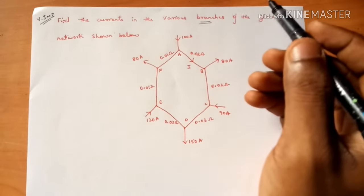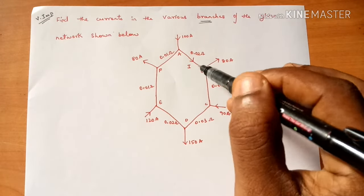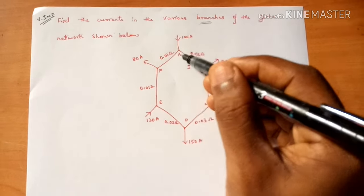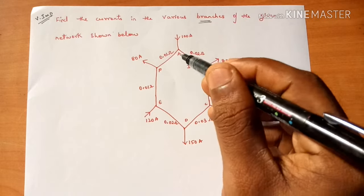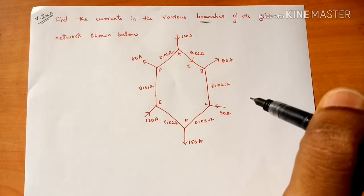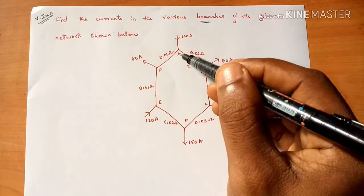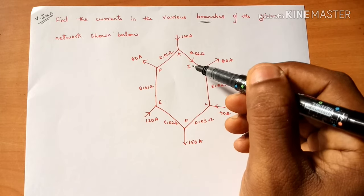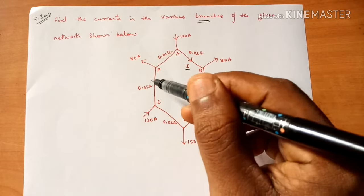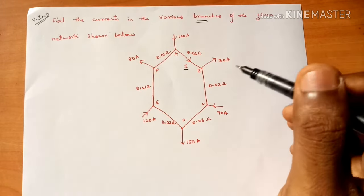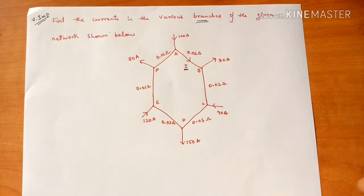This network resembles a hexagonal shape — six sides — so totally six branches are there. You can see here: one branch is A-B, B-C, C-D, D-E, E-F, and F-A. You are going to find the six branch currents. From A to B, the branch current is already given as I, but in the other branches no branch current is given.